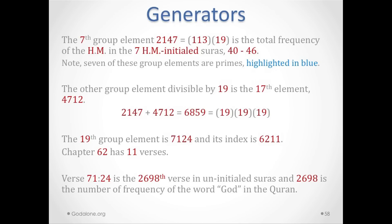Note that seven of these group elements are also prime, highlighted in blue. The other group element divisible by 19 is the 17th element, which is 4712. And 2147 plus 4712 equals 6859, which is 19 times 19 times 19.